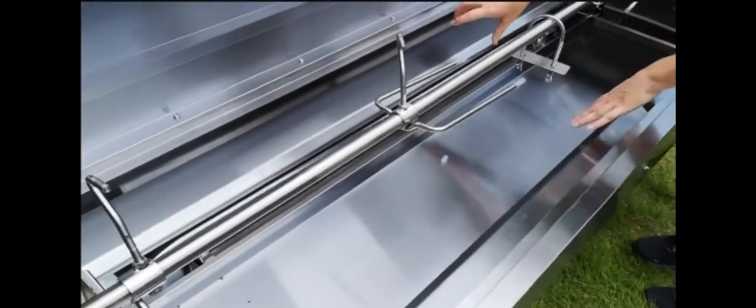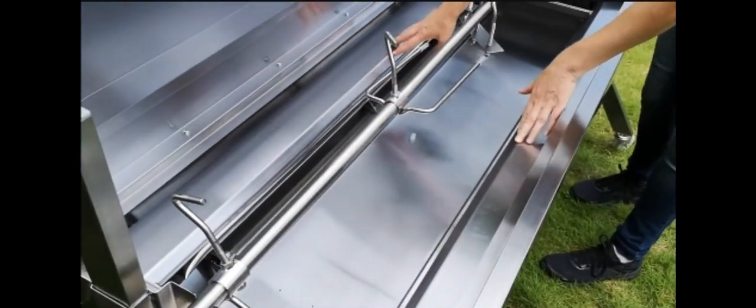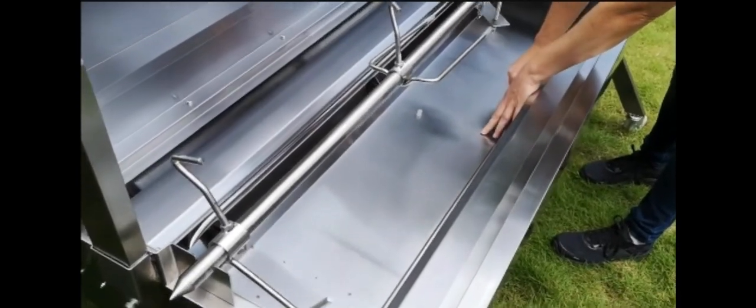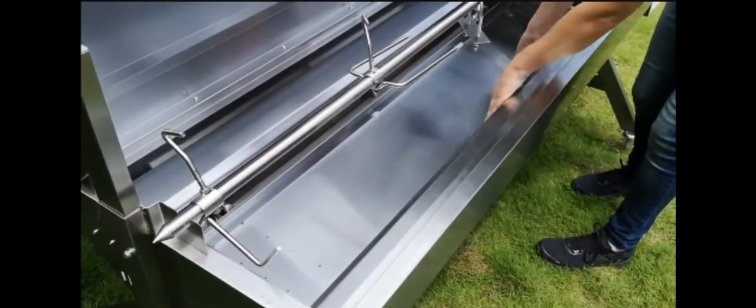Now the rail burners are protected by these protectors here to allow any fat or oil that's dripping into this dripper pan here. And then for easy cleaning, simply take this one out and wash it.